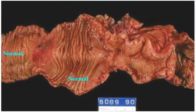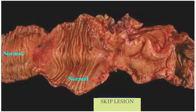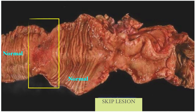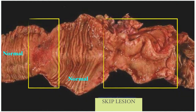This bowel segment shows a sharp demarcation between affected and unaffected bowel. The affected bowel does not form a continuous segment but shows a segmental distribution of lesion — this is what we call a skip lesion. The affected areas show loss of normal mucosa with ulcer surface and areas of narrow lumen that we call strictures. These gross features give us clues towards the diagnosis of Crohn's disease.